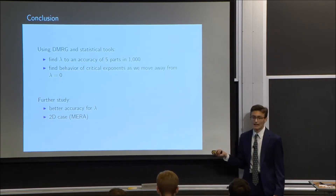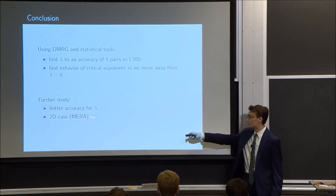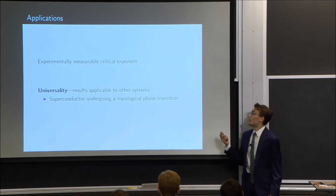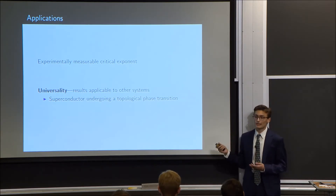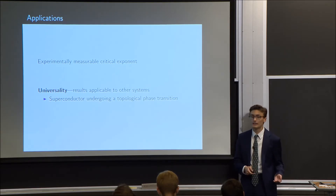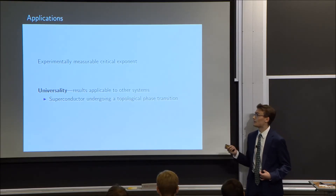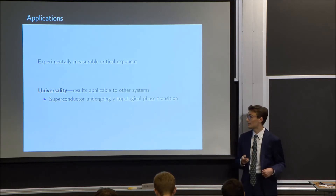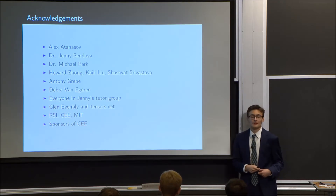Further studies should be done to find a more accurate value of lambda. The DMRG algorithm works well in the 1D case, but it fails in the 2D case — it loses its accuracy. That 2D case is interesting because we can use a different algorithm called MERA, which handles it very well. As mentioned earlier, the critical exponent is measurable experimentally, so if someone were conducting an experiment involving a tricritical quantum Ising model, they could measure that critical exponent and compare it to this theoretical value to verify the system was created correctly. Also, our results can be applied to other systems in the same universality class as the tricritical quantum Ising model — including models such as a superconductor undergoing a topological phase transition.